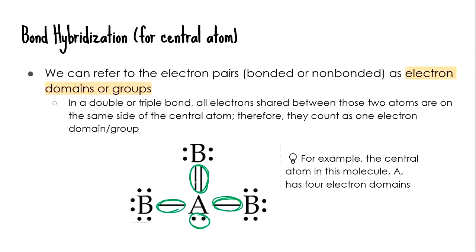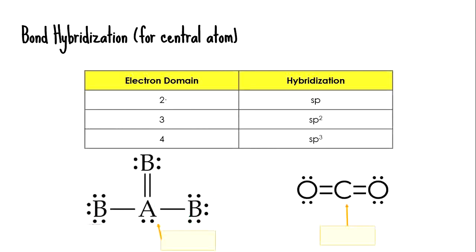If the central atom has two electron domains, the hybridization is sp. If it has three electron domains, the hybridization is sp2. If it has four electron domains, the hybridization is sp3. The previous example with four electron domains is sp3. CO2 has two electron domains — one for each double bond — so its hybridization is sp.